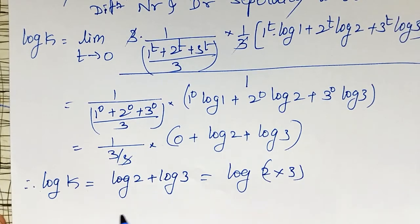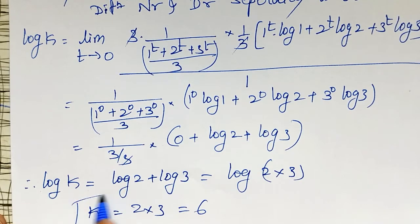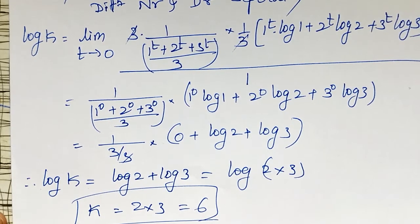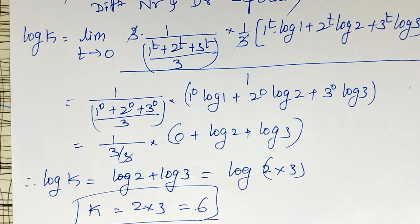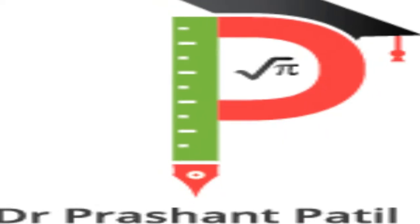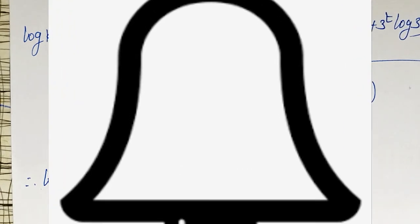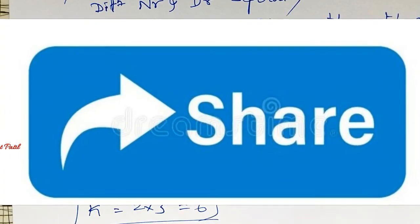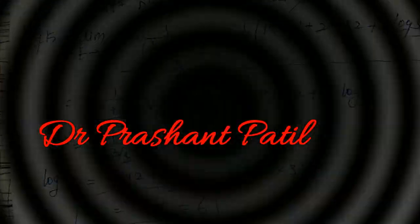Therefore k = 2 × 3 = 6. This is how to evaluate the limit as x tends to infinity. In my next videos I am going to solve more examples on 1^∞, 0^∞, ∞^∞ forms. If you have not yet subscribed my channel, please subscribe and hit the bell icon for notifications. Like, comment, and share this video. Thank you friends.